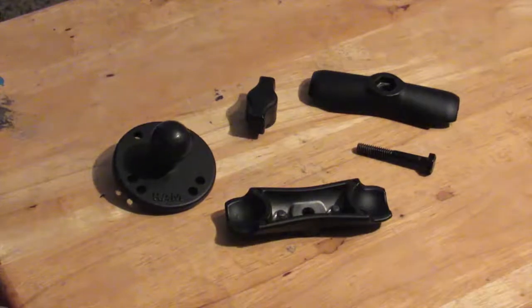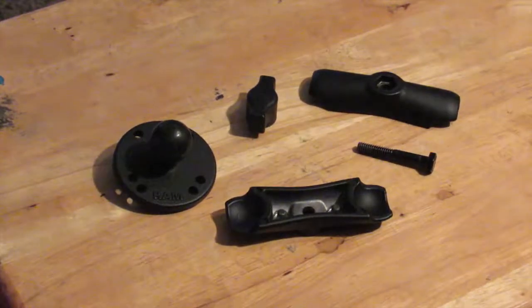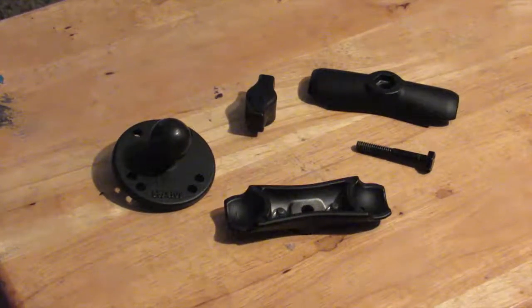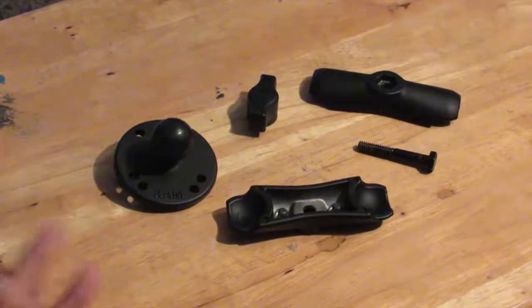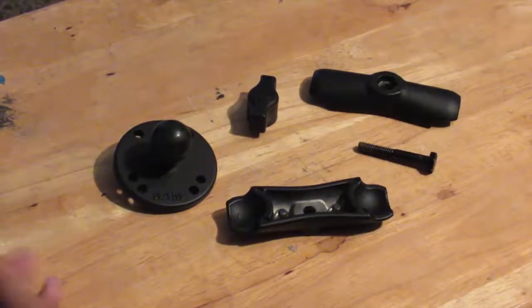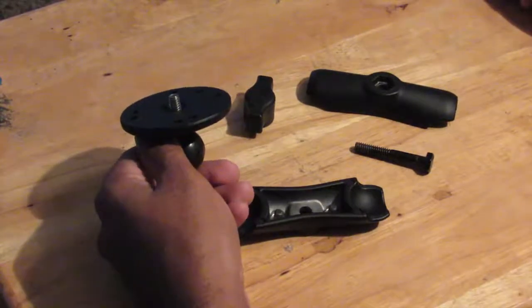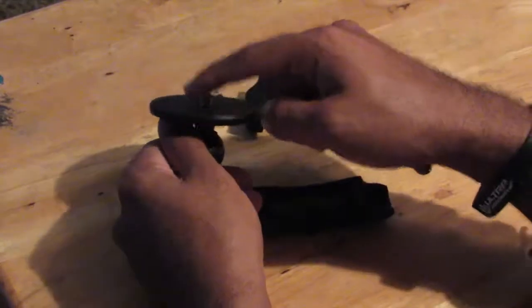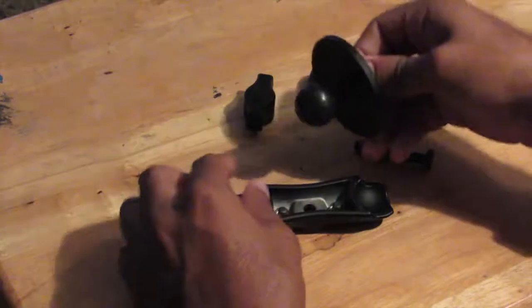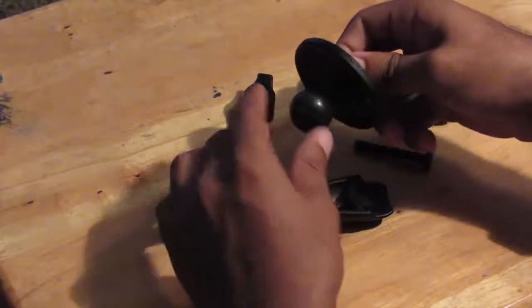So I figured why not make this a video just to show anybody else who has this RAM camera mount and this happens to them. Let me just show you how to put things back. So what this actually is, it's just where my camera would go. My camera would be placed right here and this device would clamp onto here in order to hold the camera steady.